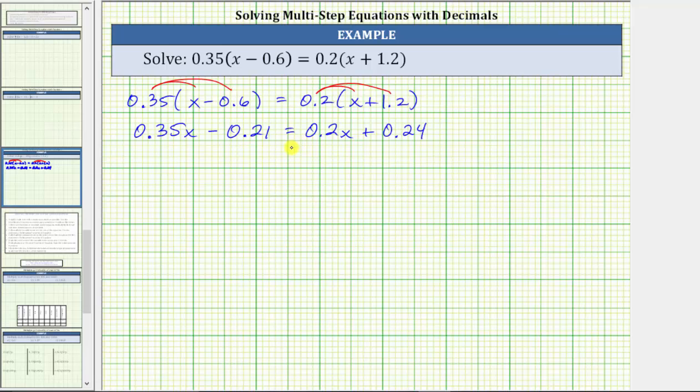We should also remember that when multiplying a decimal by 10, the shortcut is to move the decimal one place to the right. So to clear the decimals from this equation, we would have to move the decimal two places to the right, which is equivalent to multiplying by 100. The next step is to multiply both sides of the equation by 100.